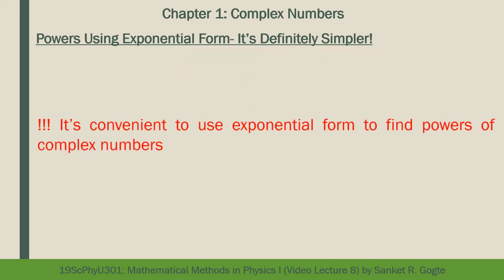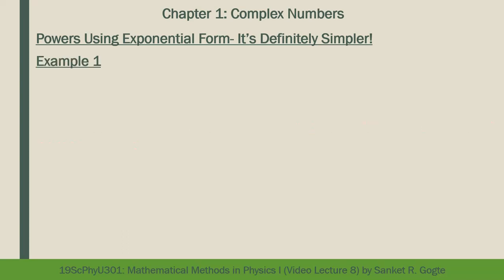This reiterates the message: it is convenient to use exponential form when finding powers of complex numbers. Let's consider an example. Suppose z = 1 + i and we want to find z^8. Keeping it in rectangular form would give 2^8 = 256 terms, so we first convert 1 + i to exponential form.